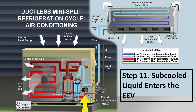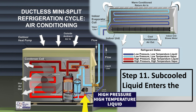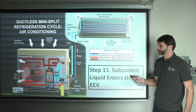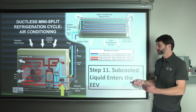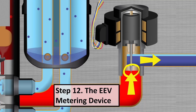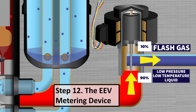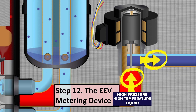Subcooled liquid enters the EEV. High pressure, high temperature liquid refrigerant enters the metering device — which is a restrictor — restricting the flow. It lowers the pressure so much that only a very small amount of refrigerant passes through the needle. It then turns into low pressure, low temperature liquid with a little bit of flash gas at the top — maybe 10% vapor and 90% liquid. This high pressure liquid becomes low pressure liquid with a little flash gas due to the availability of space.